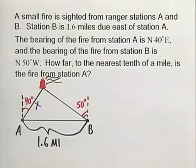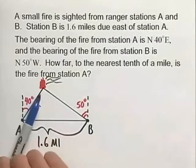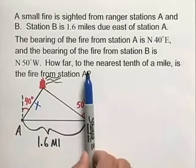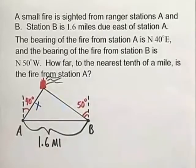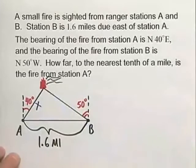Using our bearings here, we have a sighting from station A that says we see the fire north 40 degrees east from station A and similarly north 50 degrees west from station B. And what this does is it sets up a nice little triangle for us.